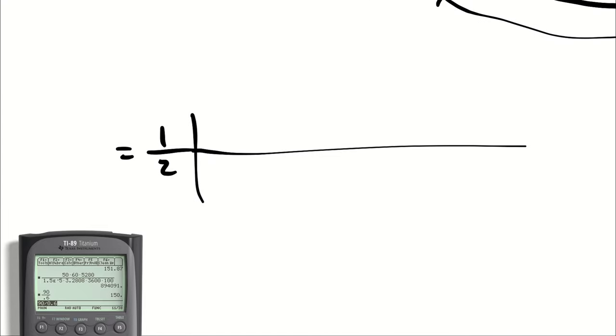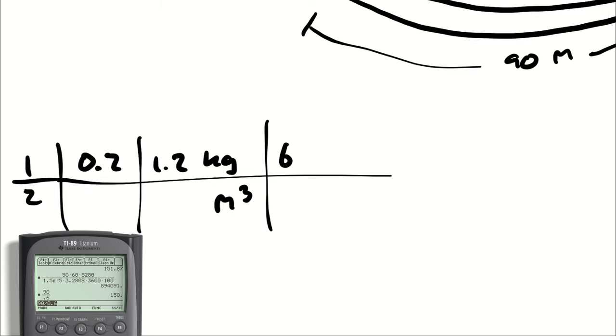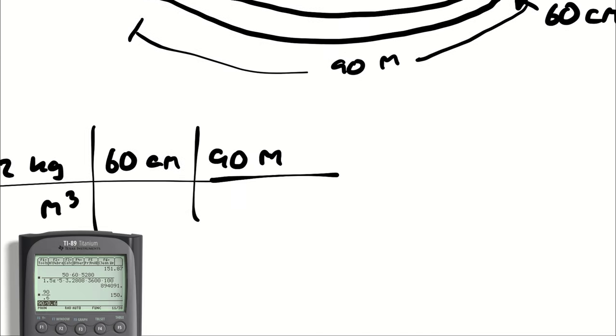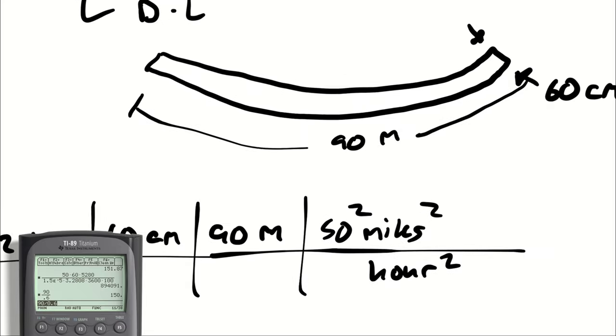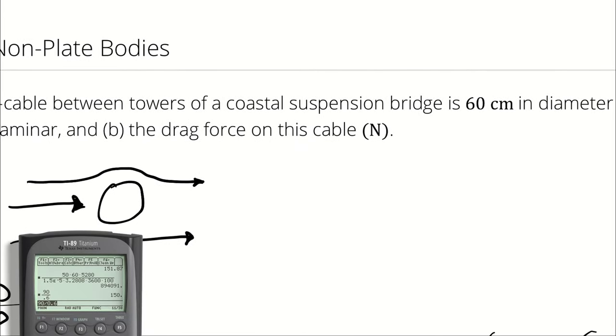So if we called the coefficient of drag about 0.2, and the density of air was 1.2 kilograms per cubic meter, and my area is 60 centimeters multiplied by 90 meters, and my velocity is 50 miles an hour squared. So I square the 50, square the miles, square the hours. And I do have a unit.